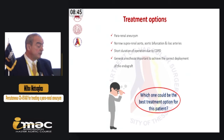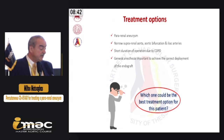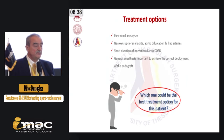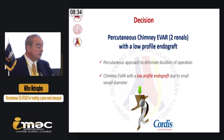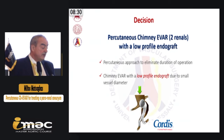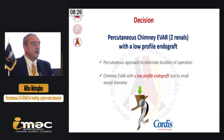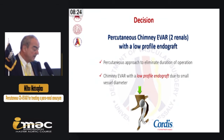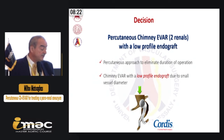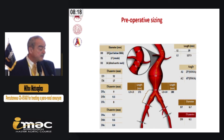We wanted a short duration of operation due to the very severe COPD, to have general anesthesia and to be assured that our grafts would be placed in the right position. So we decided to treat him with a percutaneous Chimney EVAR with two renal arteries using a low-profile endograft — the INCRAFT endograft from Cordis — and decided to do it with percutaneous access.